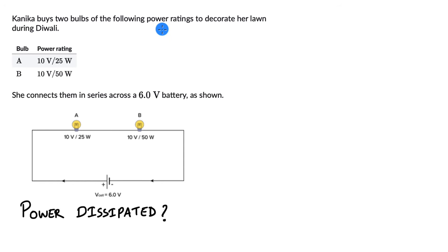Kanika buys two bulbs of the following power ratings to decorate her lawn during Diwali. We can see there are two bulbs A and B. We have the power rating. She connects them in series across a 6 volt battery as shown. So we have the two bulbs connected in series and it is connected across a 6 volts battery. We need to figure out the power dissipated in each of these bulbs.